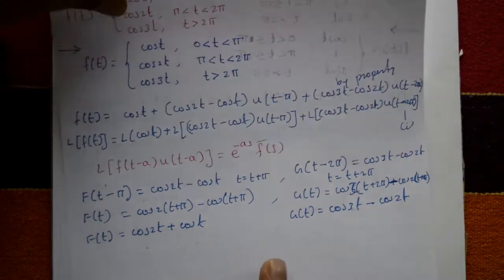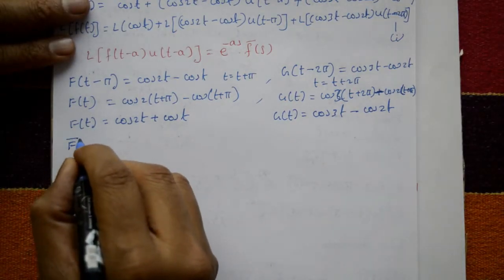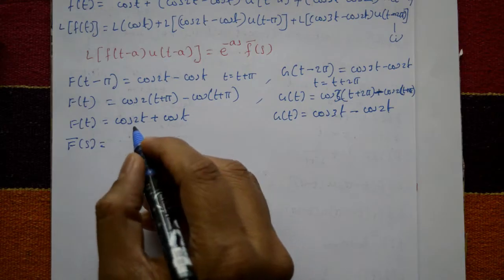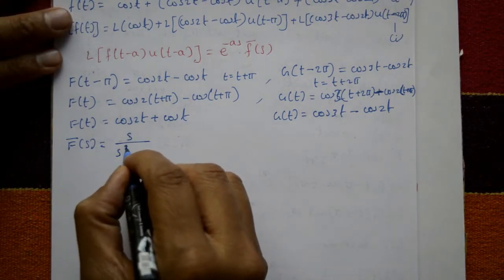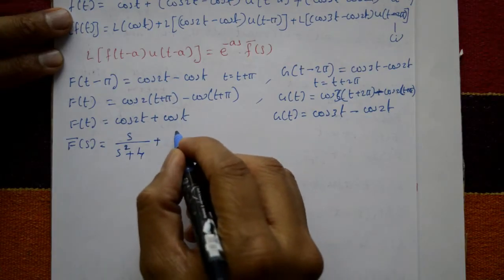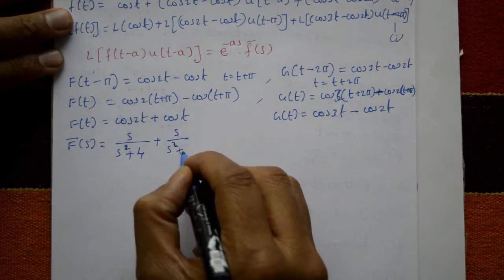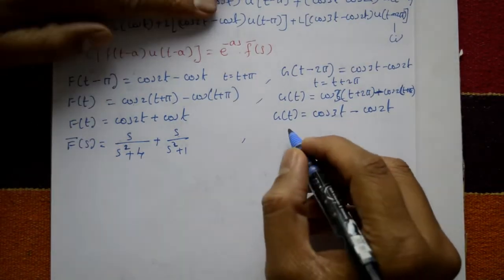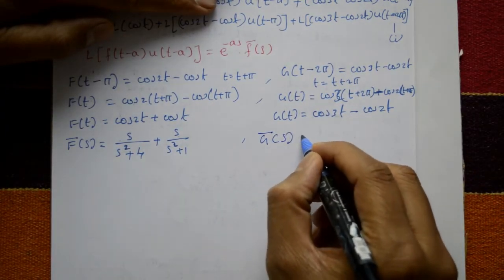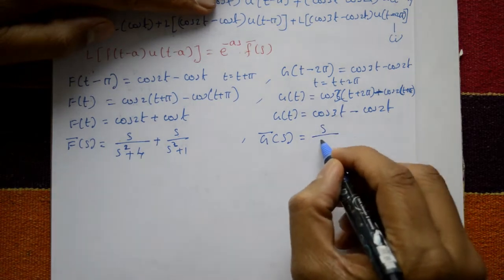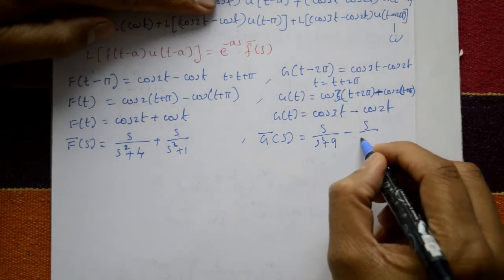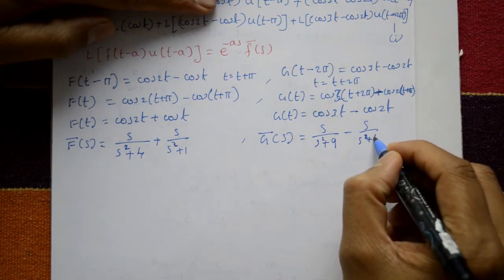The Laplace transform of cos 2t is s/(s² + 4), and the Laplace of cos t is s/(s² + 1). So ḡ(s), the Laplace of g(t), equals s/(s² + 9) − s/(s² + 4).